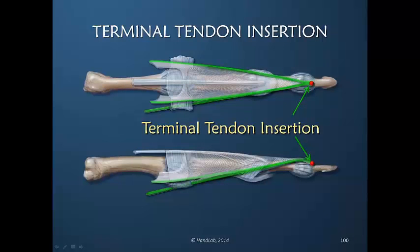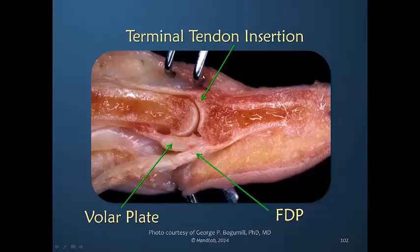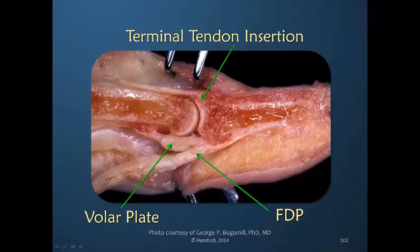The lateral bands provide a much more direct power to the terminal tendon insertion. The lumbrical and the interosseous are the muscles providing the distinct power into the lateral bands — there's no direct power from the EDC into the lateral bands. So the terminal tendon insertion receives both the power of the lateral bands as well as secondary power from the EDC via the conjoined lateral bands. Here we see the terminal tendon insertion, lateral view of the DIP joint, with a significant volar plate and the insertion of the very mechanically powerful flexor digitorum profundus.